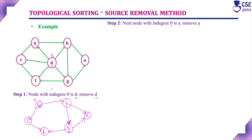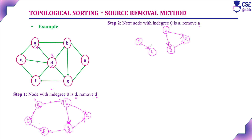After removing A from the graph along with its edges, the resultant graph will contain vertices B, C, F, G, and E. A has two edges, which are removed along with it. This is the resultant graph.